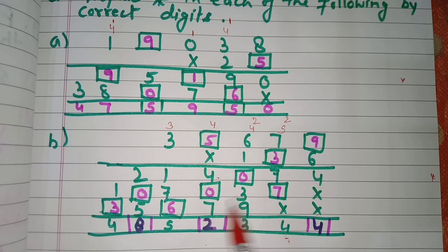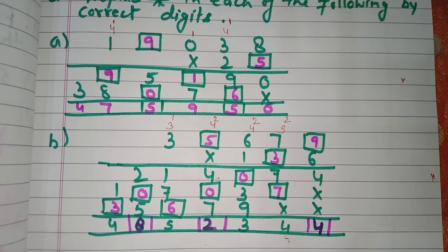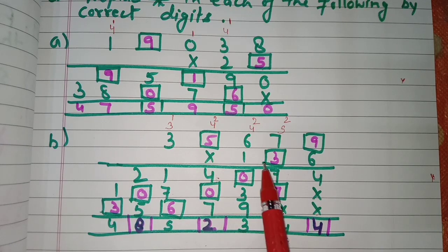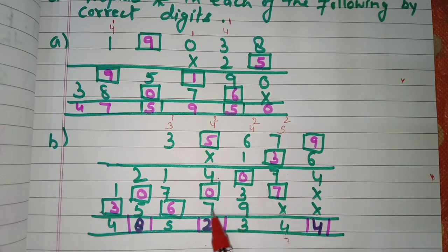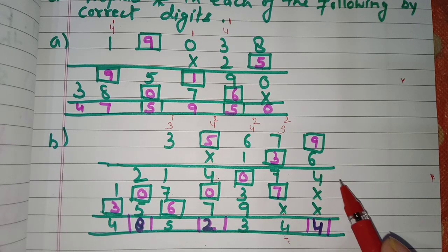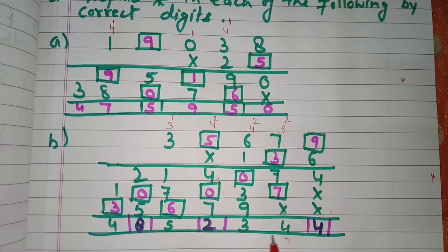Continuing: three fives are 15 plus two carry is 17 — carry one. Three threes are nine plus one is 10. Then for hundreds place digit one: one nine is nine, one seven is seven, one six is six, one five is five, one three is three. Adding all partial products, the final answer is 48 lakh 52 thousand 344.